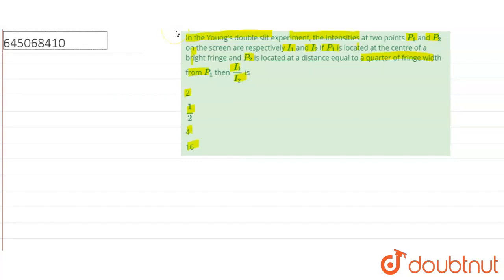In the Young's Double Slit experiment, bright fringes and the central bright fringe have the same intensities — they have maximum intensities, which is called maxima. So, the central bright fringe has maximum intensity, that is I1.